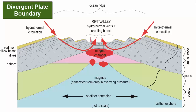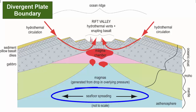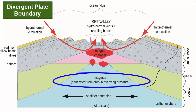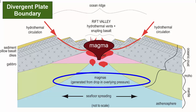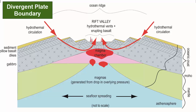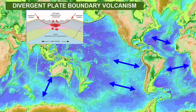Divergent plate boundary volcanism is produced by the thinning of the lithospheric plates as they are stretched apart. The subsequent reduction in pressure in the underlying mantle reduces the melting temperature of the rocks. Magmas form and rise to the surface to produce volcanism. Because of coincident spreading, lavas rarely pile up fast enough to produce volcanoes or rise above sea level. Instead, they simply produce more oceanic crust and spread and make bigger oceans. Thus, divergent plate boundary volcanism is found throughout the world's oceans on the mid-ocean ridges that mark the spreading centers.